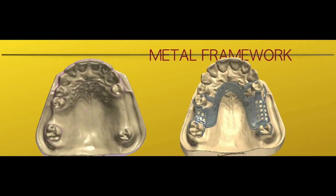One of the clear differences between making a complete denture versus a partial denture is that a partial denture does require a metal framework for structural integrity and rigidity. As shown, this maxillary cast is partially edentulous, and today we're going to discuss about the five components needed to design the metal framework.